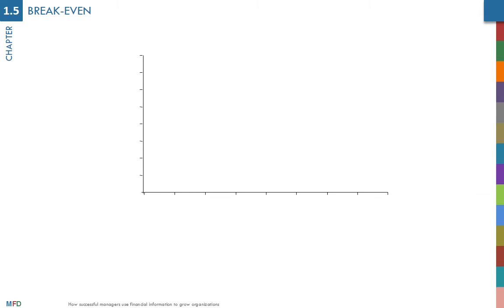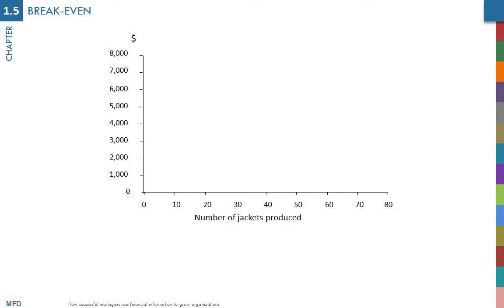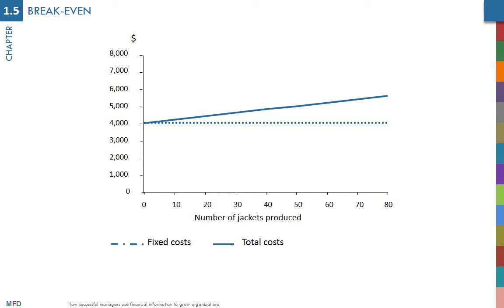The breakeven point is also frequently identified using a breakeven chart. The vertical axis represents money and the horizontal axis is the number of units. The cost line starts on the vertical axis at the level of fixed costs and goes up with the number of units because of the variable cost. The sales line starts at the origin and goes up with the number of units. The point where sales and cost lines intersect is the breakeven point, where you have no profits and no losses.